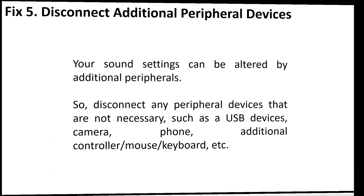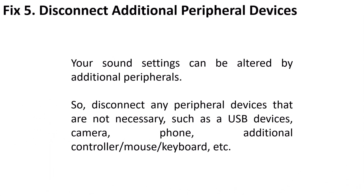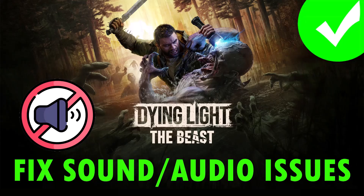Fix 5: Disconnect additional peripheral devices. Your sound settings can be altered by additional peripherals, so disconnect any peripheral devices that are not necessary, such as USB devices, camera, phone, additional controller, mouse, keyboard, etc. Then launch the game and check. I hope that by following these fixes you will be able to fix sound or audio issues in Dying Light: The Beast game.